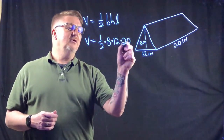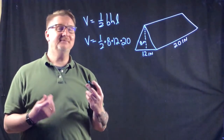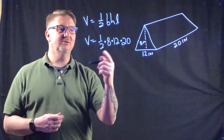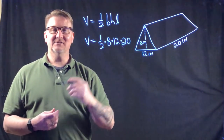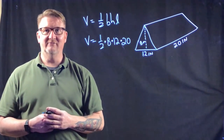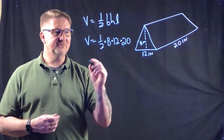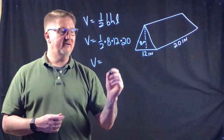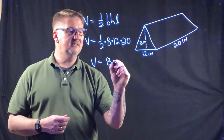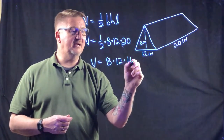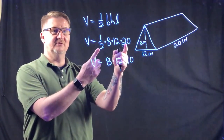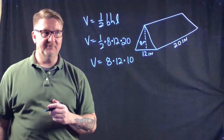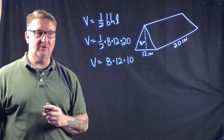What I like to do is take half of one of the numbers. Since they're all even, I'll take half of 20, which is 10. So instead of one half times 8 times 12 times 20, I now have 8 times 12 times 10 — I've effectively already multiplied one half times 20. You could also multiply all three numbers and divide by 2; that's completely acceptable.